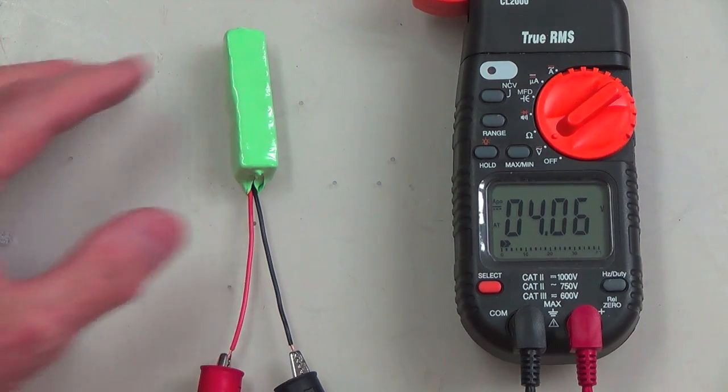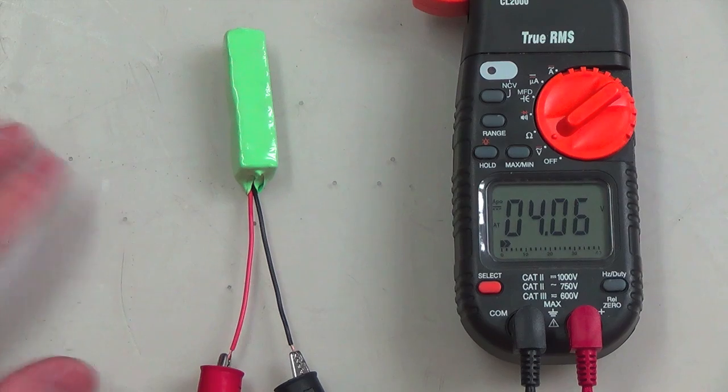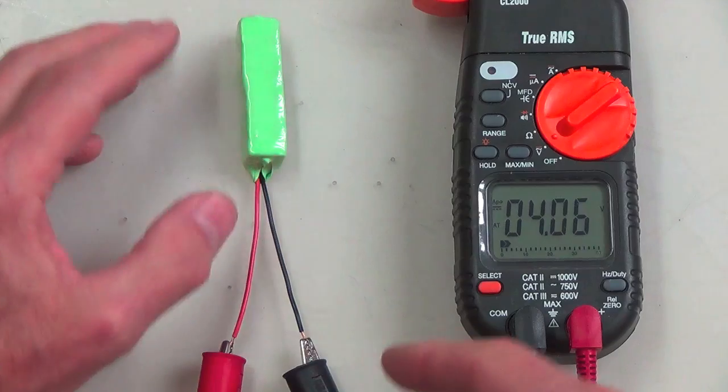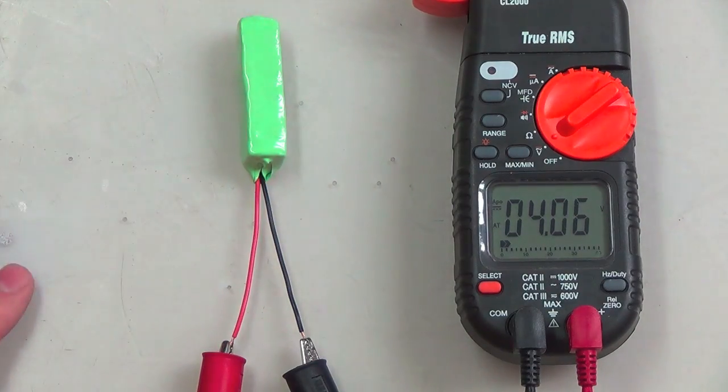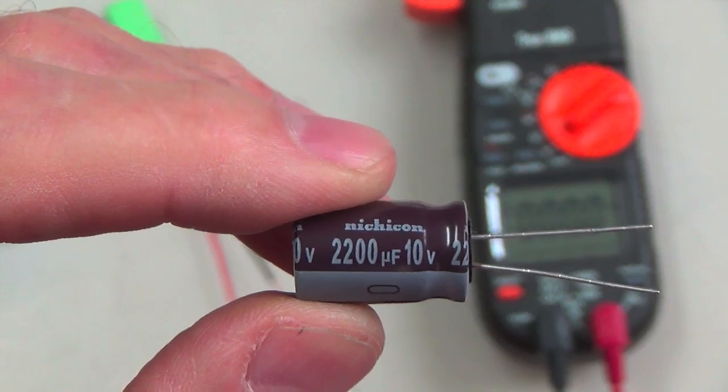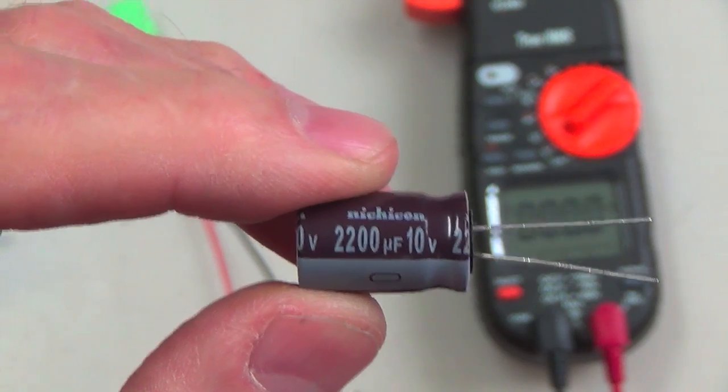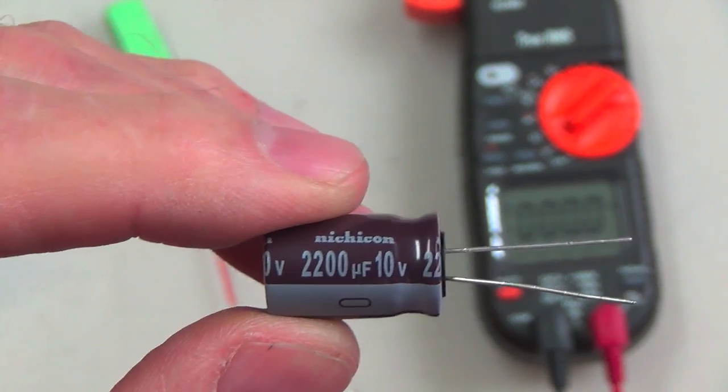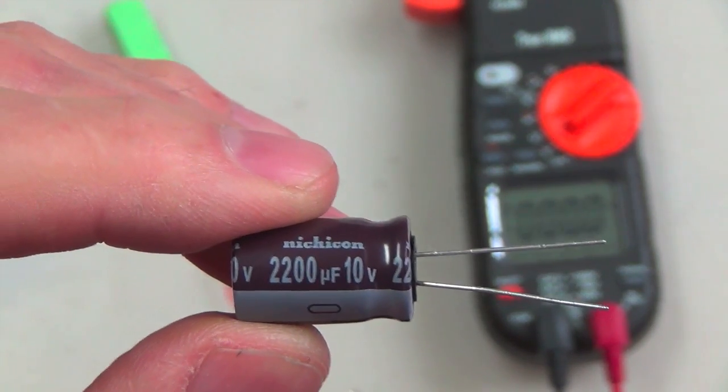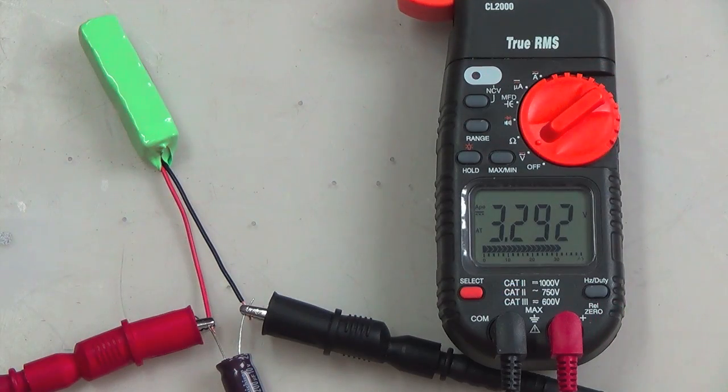But I think these are pretty good at this double-A size—could be any size really. The applications for something like this would just be endless. All right, so now let's hook up a capacitor and let me show you—I'll short out the capacitor and show you how fast it can charge that up. Just for your reference, this cap is 2200 microfarads at 10 volts.